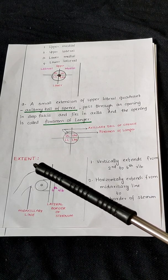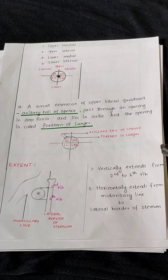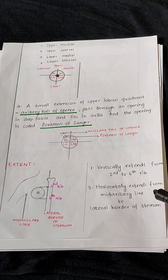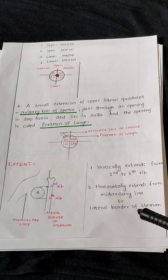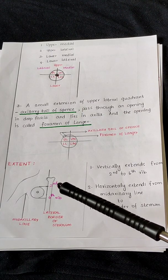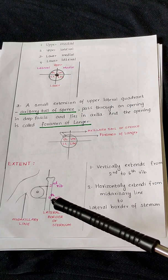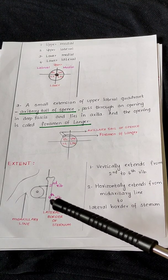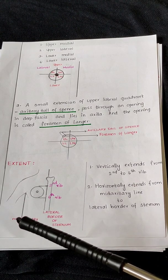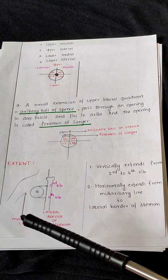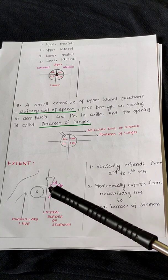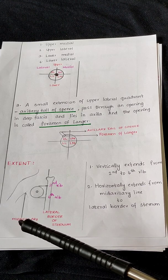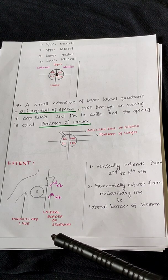Regarding the extent of the breast: vertically it extends from the second rib to the sixth rib, and horizontally it extends from the mid-axillary line to the lateral border of the sternum.